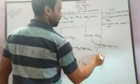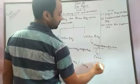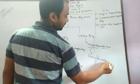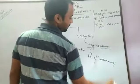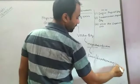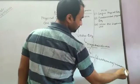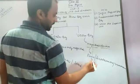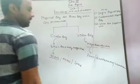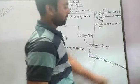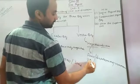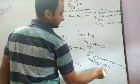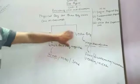Examples of vector quantities are force, displacement, momentum, and torque. These are called vector quantities.